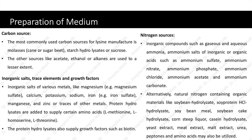The protein hydrolysates also supply growth factors such as biotin. Another important component is the nitrogen source. Inorganic compounds such as gaseous and aqueous ammonia, and ammonium salts of inorganic or organic acids — such as ammonium sulphate, ammonium nitrate, ammonium phosphate, ammonium chloride, ammonium acetate, and ammonium carbonate — can be used. Alternatively, natural nitrogen-containing organic materials such as soybean hydrolysate, soy protein hydrolysate, soybean meal, soybean cake hydrolysate, corn steep liquor, casein hydrolysate, yeast extract, meat extract, malt extract, urea, peptones, and amino acids may also be utilized as nitrogen sources.